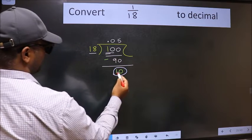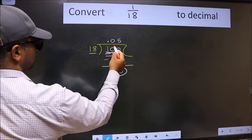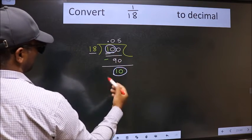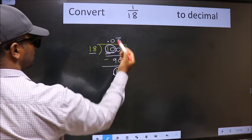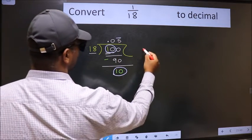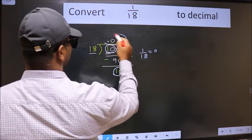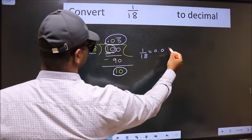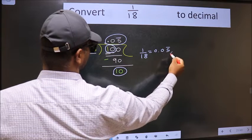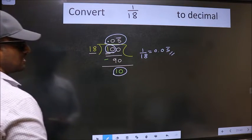We got 10 again. Earlier also, there was 10. That means we get bar on this number. Therefore, decimal of 1 by 18 is this one. 0.05 bar on this number. This is our answer.